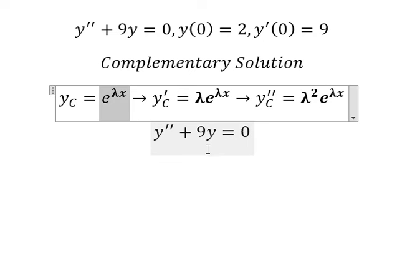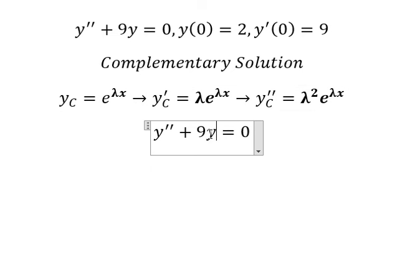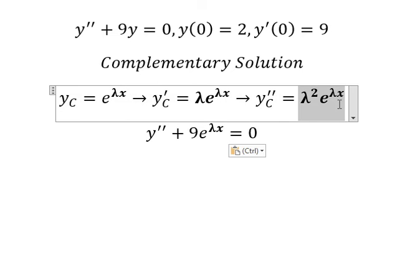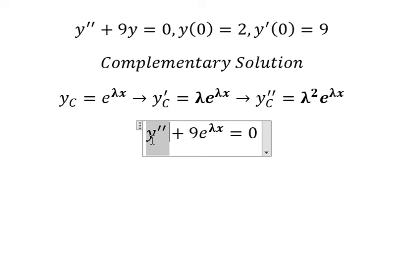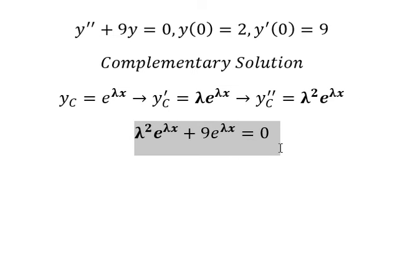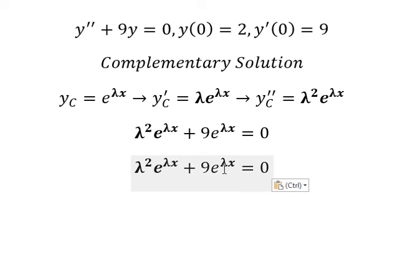Now we do the second derivative, which gives us lambda squared e to the power of lambda x. We substitute these into the equation and then we can do factorization with e to the power of lambda x.